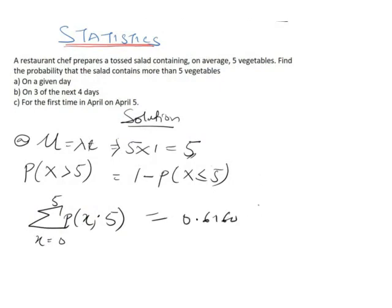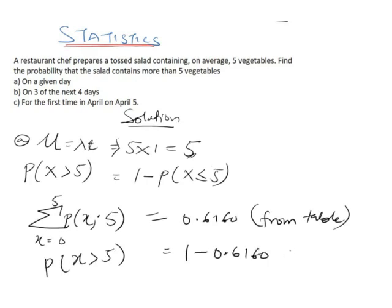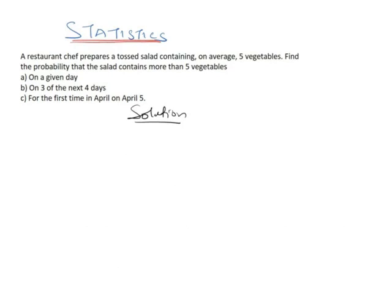We should note that this is from the table. So what we are trying to find is the probability of X greater than 5, which is equal to 1 minus 0.6160, which is the same thing as 0.384. This is for part A.